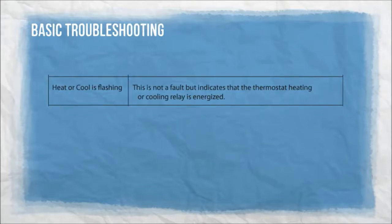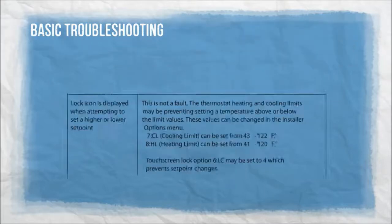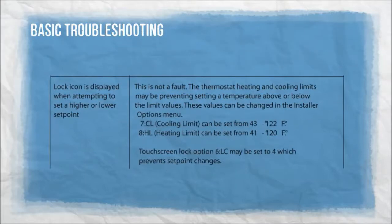Heat or cool is flashing — this is not a fault, but indicates that the thermostat heating or cooling relay is energized. Lock icon is displayed when attempting to set a higher or lower set point — this is not a fault. The thermostat heating and cooling limits may be preventing setting a temperature above or below the limit values. These values can be changed in the installer options menu: 7CL for cooling, 8HL for heating. Touch screen lock option 6LC may be set to 4, which prevents set point changes.